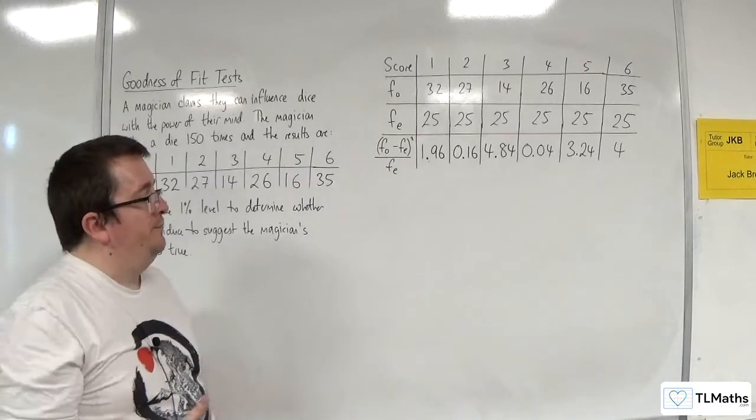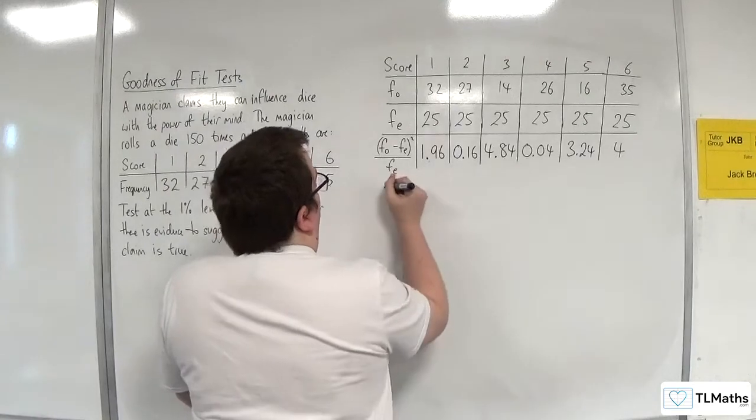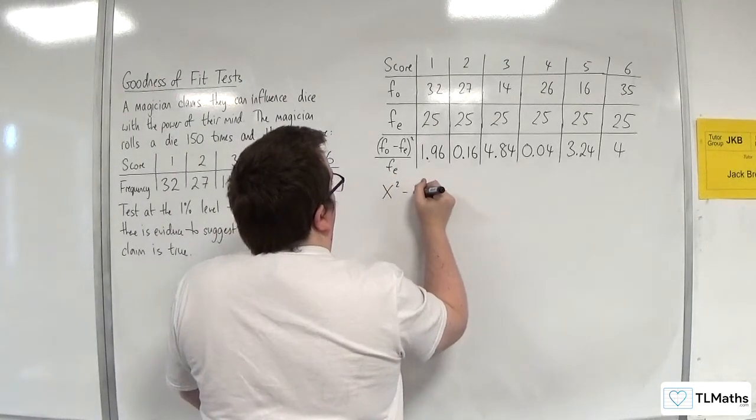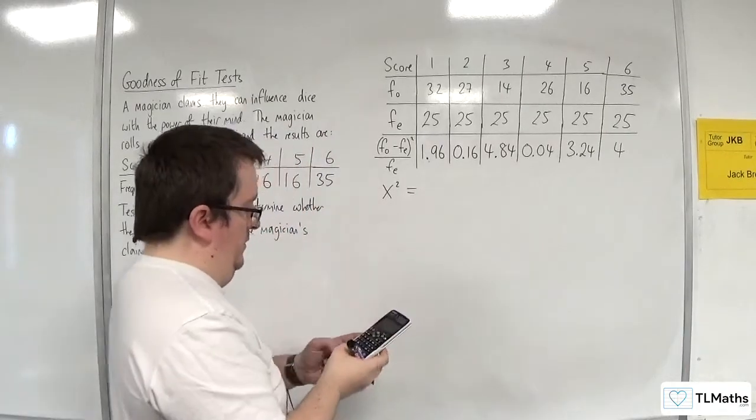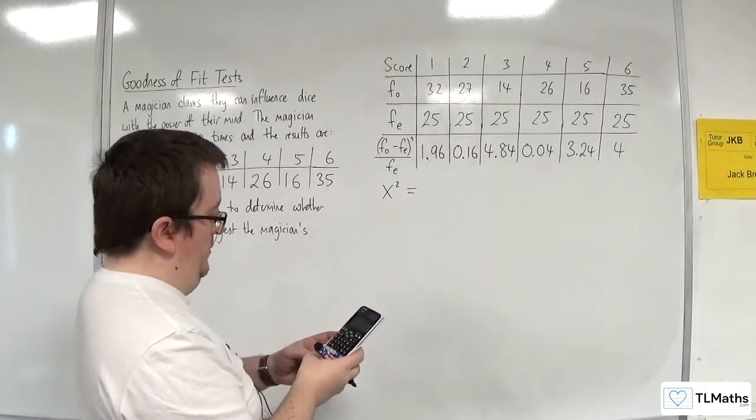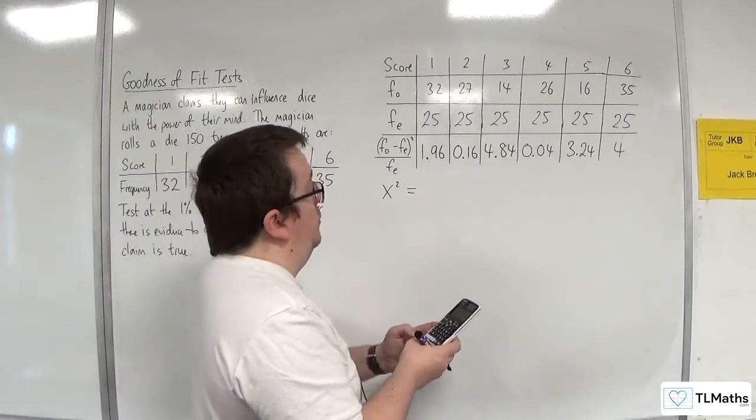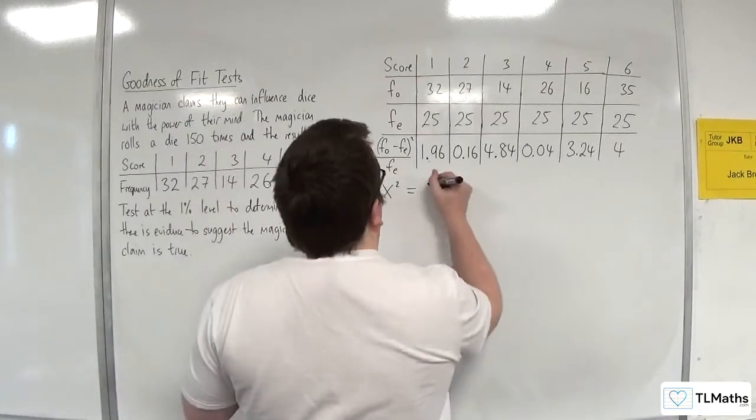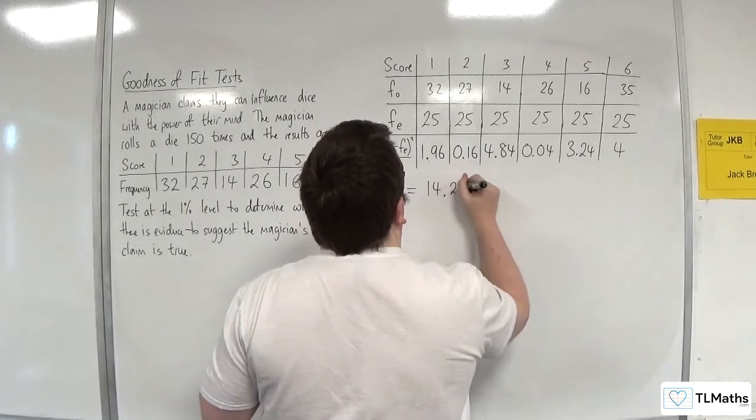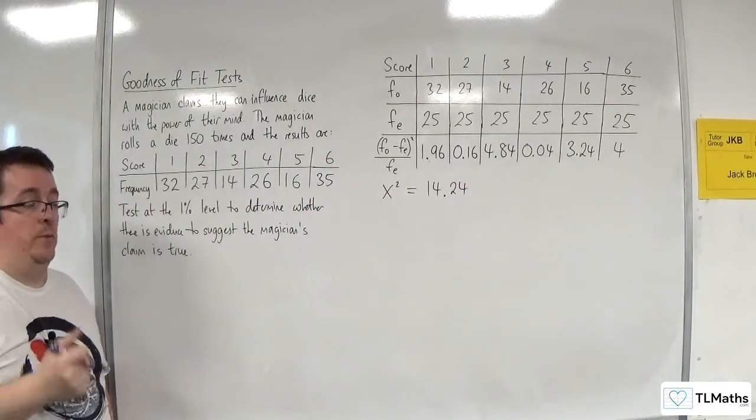Right, so these are our contributions then. So, what we want is the chi-squared statistic. So, that would be the sum of all of these. So, we'd have 1.96 plus 0.16 plus 4.84 plus 0.04 plus 3.24 plus 4. And that gets us 14.24.